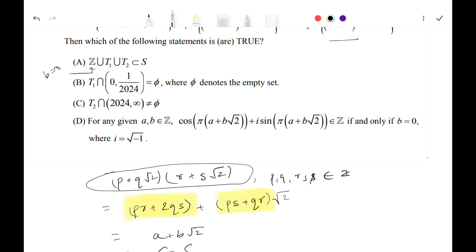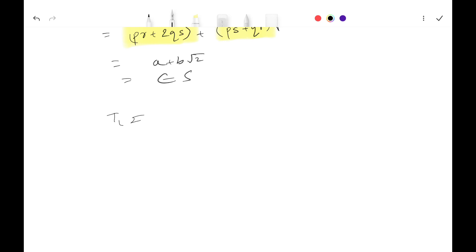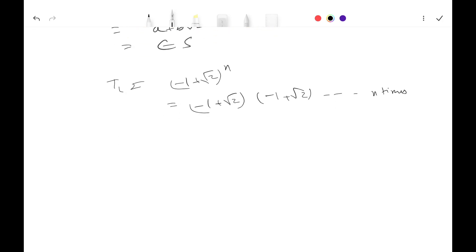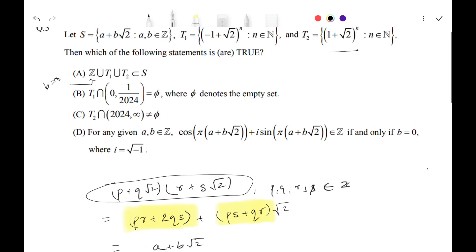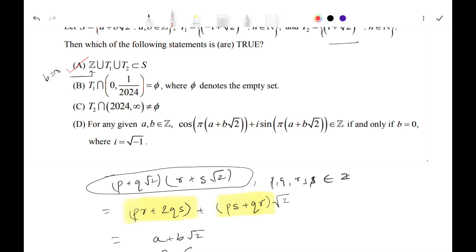This means if we multiply any number of this form, we stay within set S. T1 = (-1 + √2)^n is a repeated product of (-1 + √2), and by the closure argument, each such product lies in S. Similarly for T2. So T1 ⊆ S and T2 ⊆ S, meaning Option A is correct.